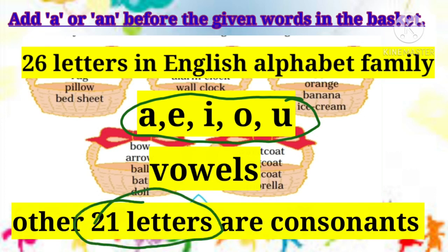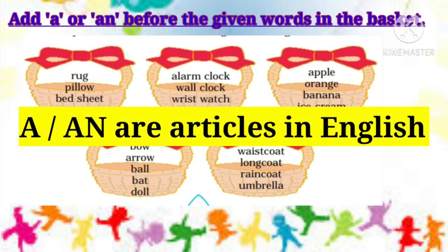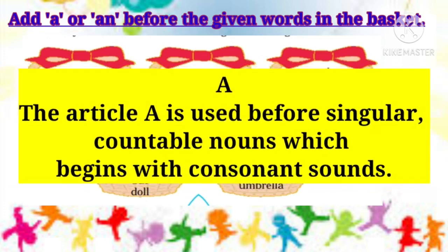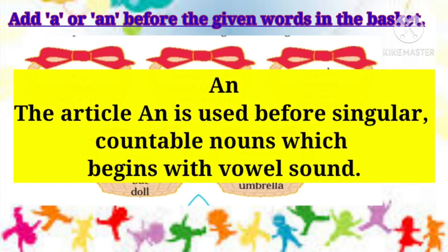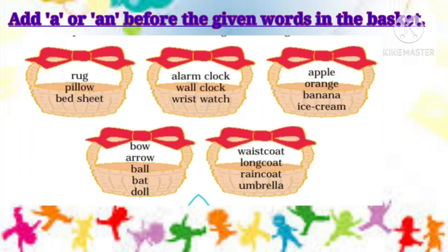'A' and 'an' are articles in English. The article 'a' is used before singular countable nouns which begin with consonant sounds, and the article 'an' is used before singular countable nouns which begin with vowel sounds. Now add 'a' or 'an' before the given words in the baskets.